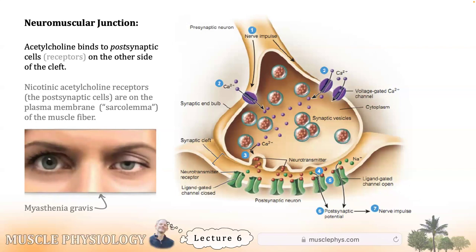In skeletal muscle, you have nicotinic receptors. Once acetylcholine binds to those receptors, there's an influx of sodium into the muscle. The resting membrane potential of muscle is not negative 70 mV — it's about negative 90 mV. That change in membrane potential is what stimulates the muscle to contract, and we'll get there in just a minute.